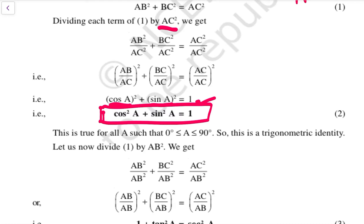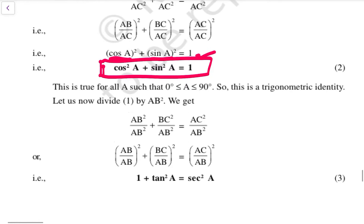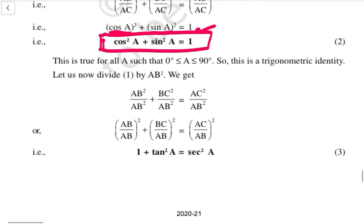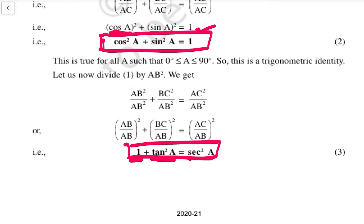Now let us divide the equation by AB². Likewise, we get (AB/AB)² + (BC/AB)² = (AC/AB)². Here BC/AB is tan A and AB/AB is 1, and AC/AB is sec A. So the second identity is: 1 + tan²A = sec²A.